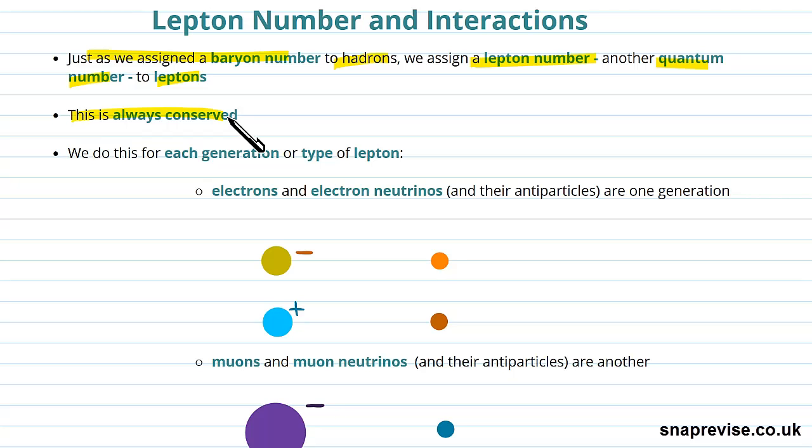We can think of this just like charge - a number that we associate with particles that's always conserved. We have the same thing with lepton number. We assign it to leptons and it's always conserved in all interactions. Before we get into the details, this is what's going to explain why certain interactions occur.